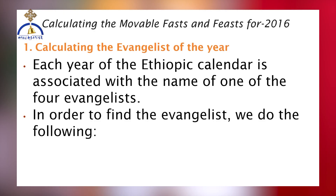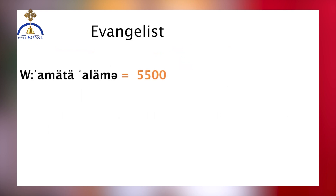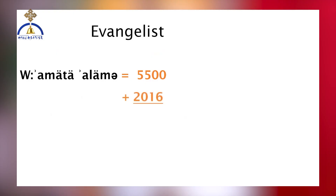In the Ethiopian calendar, each year is associated with the name of one of the four evangelists. To determine the evangelist for a specific year, a calculation is performed. First, the Amet Alam, which signifies the year of the world, is found. This involves adding 5,500 years, which existed before the birth of our Lord and Savior Jesus Christ, to the years after His birth. For example, in the year 2016, the year of the world is 7,516.